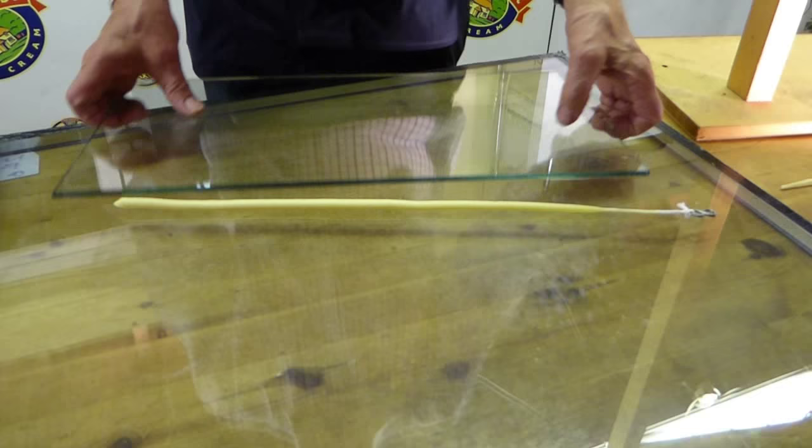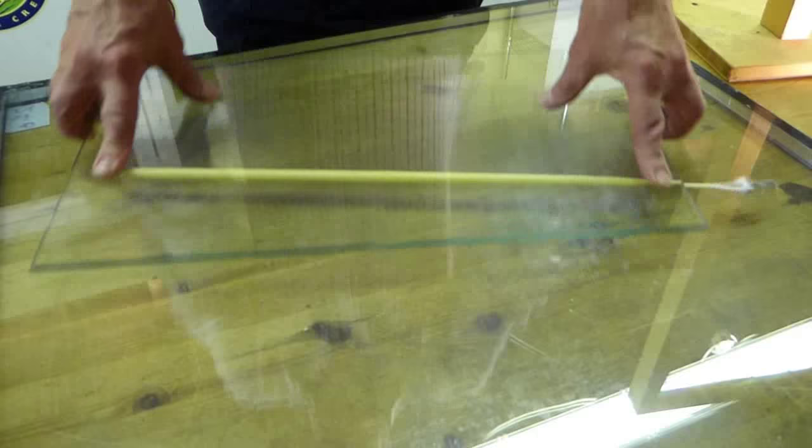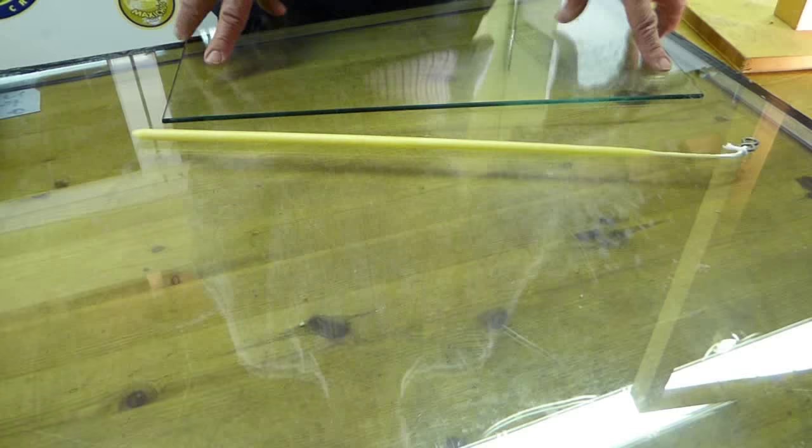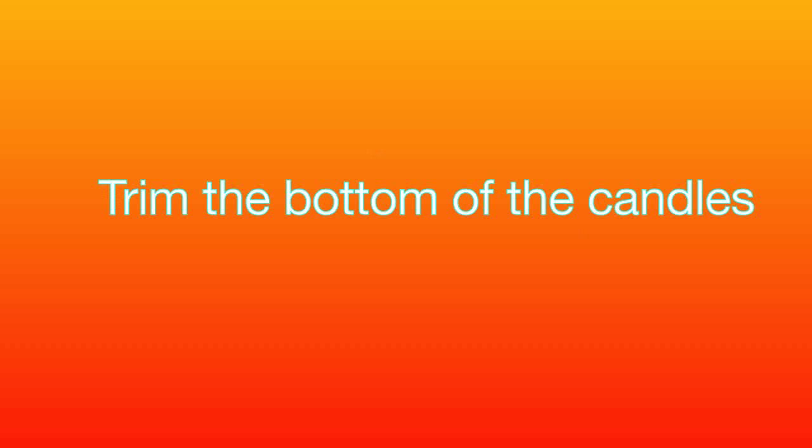After about four or five dips, you'll need to roll the candle. The purpose of this is to make sure the candle's straight and the sides are smooth. Place the first candle you made between the two panes of glass and apply some gentle pressure, gently rolling all of the time to make sure that the candle is round and the sides are smooth.